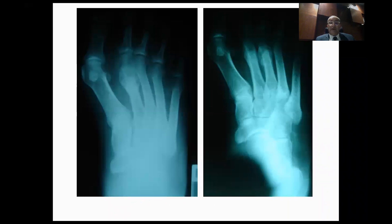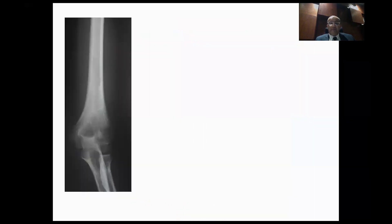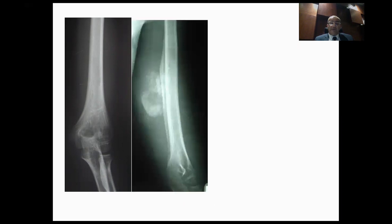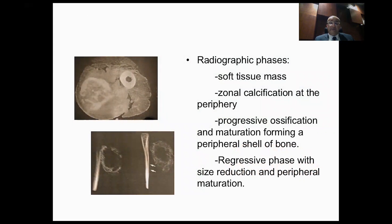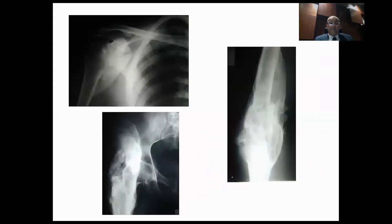Another form of stress fracture with callus around it could be mistaken for a tumor of the metacarpus — it is pure callus. A very common entity in the differential diagnosis is myositis ossificans, which can be mistaken for parosteal osteosarcoma or soft tissue sarcoma. If you look carefully, the ossification has a peripheral pattern — it is empty from the inside. On radiographs, it passes through phases: first a soft tissue mass without ossification, then peripheral zonal calcification, progressive ossification, and finally a peripheral shell of bone empty from the inside.